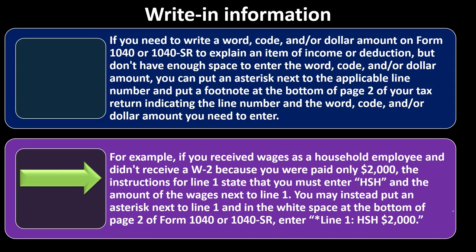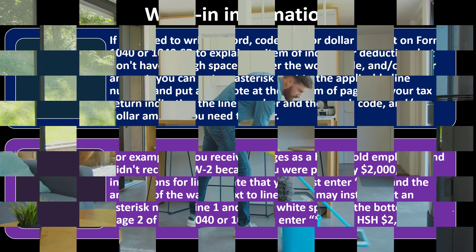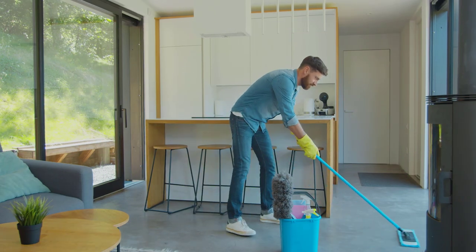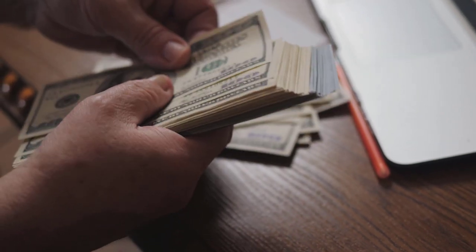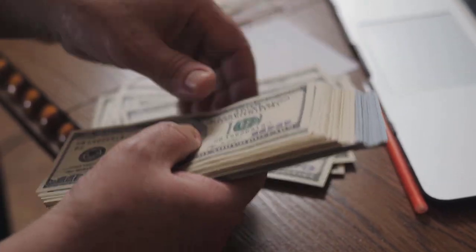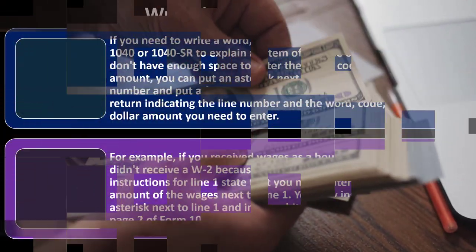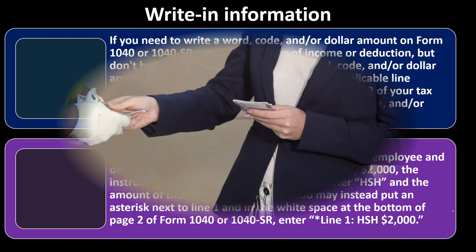For example, if you received wages as a household employee and didn't receive a W-2 because you were paid only $2,000, the instructions for line 1 state that you must enter "HSH" and the amount of the wages next to line 1.